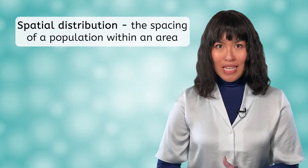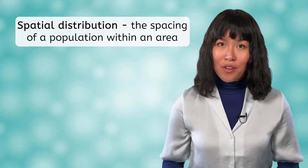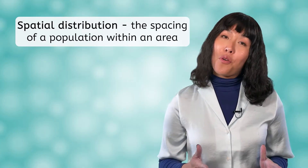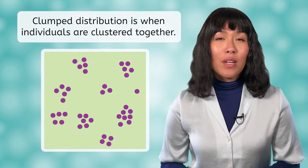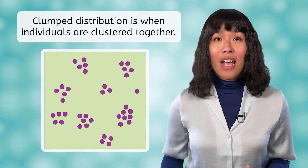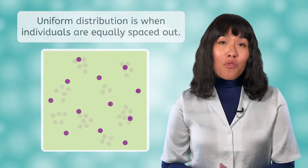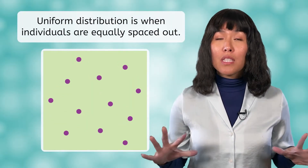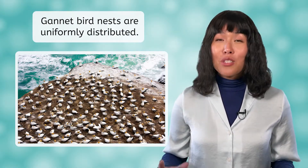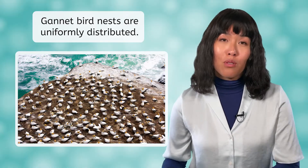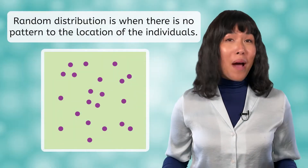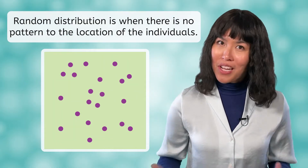Spatial distribution is the spacing of a population within an area. There are three patterns for populations: clumped, uniform, and random. Clumped spacing is when individuals are clustered together, usually due to social behavior and access to resources. Uniform distribution is when individuals are equally spaced out — for example, gannet birds try to stay far away from each other so that they can defend their nests against other birds in the population. The final distribution, random, is when there is no pattern to their location. This is very rare.